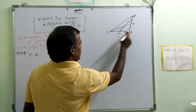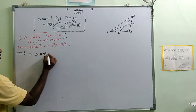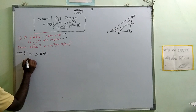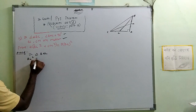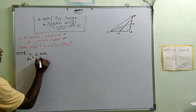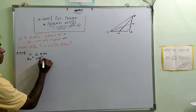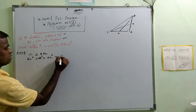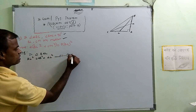In triangle BAL, by Pythagoras theorem: BL² equals AB² plus AL². This is equation one. I could put the square root, but we keep it as is.